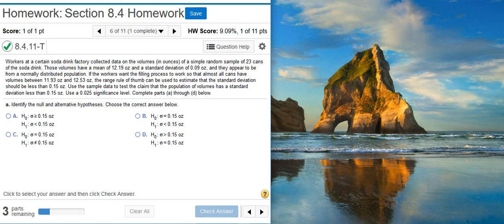Part A says identify the null and alternative hypotheses. We know that the null hypothesis is by definition a statement of equality, so we're not going to choose answer option A or answer option D. To select between answer options B and C, we look at the alternative hypothesis. That typically comes from the claim, and here the claim is that the population of volumes has a standard deviation less than 0.15 ounces.